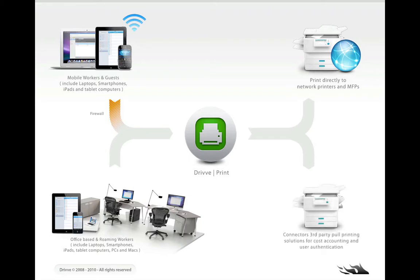The job is grabbed by the DrivePrint server, which is sitting on a server or workstation within the client's network. And then it's converted and now either held or submitted directly to a printer or an MFP. So the basic architecture is the same — you're still installing DrivePrint, it's serving as a print server, though now the release options and some of the other options are a little more expanded.